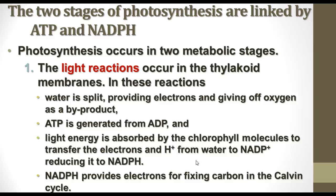The two stages are the light-dependent reactions and the light-independent reactions. The light reactions occur in the thylakoid membranes. In these reactions, water molecules are split, providing electrons for NADPH to carry, and oxygen is given off as a byproduct. ATP is generated from ADP using light energy. The energy absorbed by chlorophyll allows electrons and hydrogen ions from water to be transferred to NADP+ to produce NADPH, which then provides electrons for the carbon fixation process that occurs in the Calvin cycle.